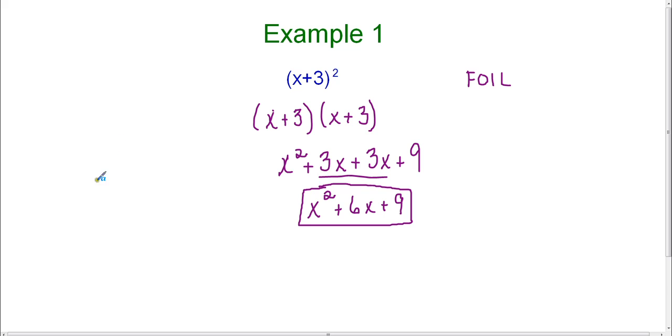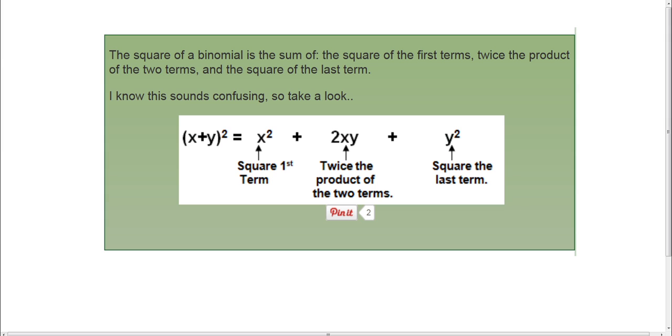However, there is an easier way, or a quicker way, if you can remember the formula. And that formula says that the square of a binomial is the sum of the square of the first terms, twice the product of the two terms, and then the square of the last term.